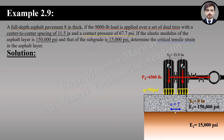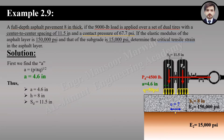In the solution, the first step is to find the modified radius and modified thickness. First we find the contact radius using a equals the square root of P divided by pi times q. By putting in the values we get a equals 4.6 inches. Using the values of contact radius, thickness, and dual spacing in the modified radius equation, we get a-dash equals 9.6 inches.